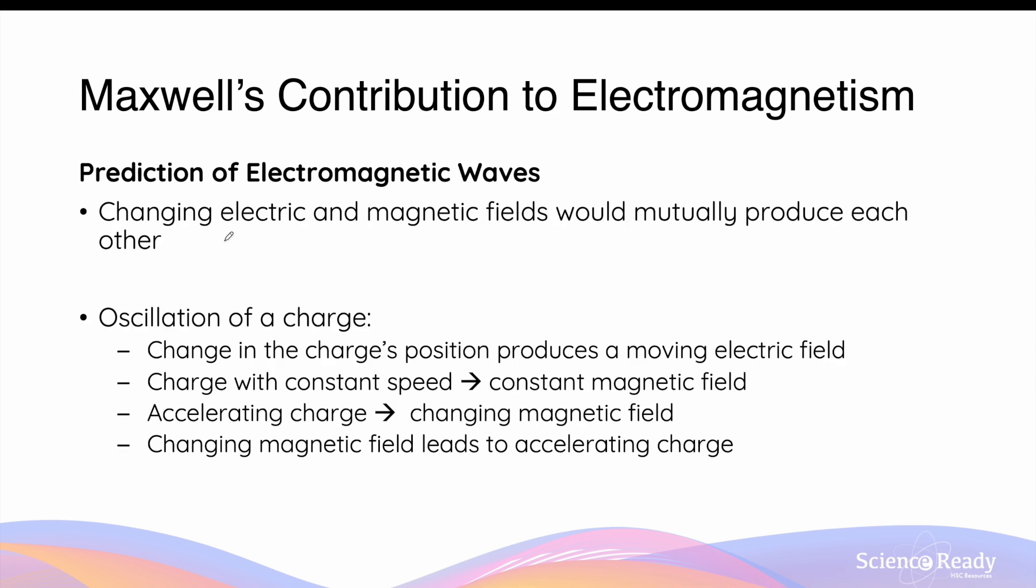Maxwell's second theory was his prediction of electromagnetic waves, EM waves for short. In addition to the unification of electric fields and magnetic fields, Maxwell further proposed that a changing electric field and a changing magnetic field will mutually produce each other. He used an oscillating charge to demonstrate this idea.